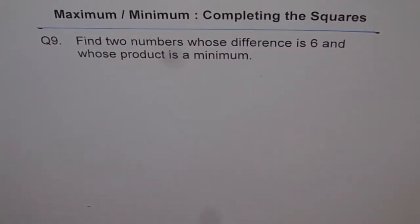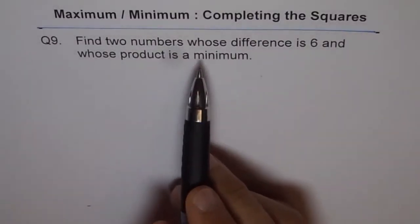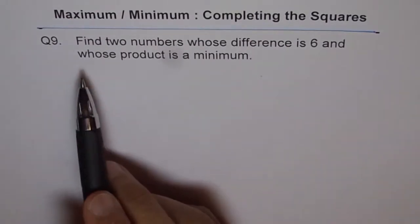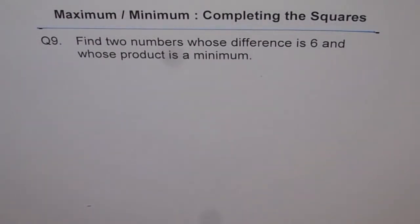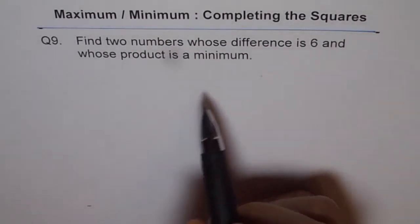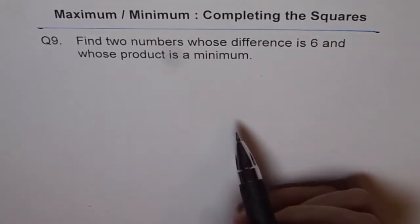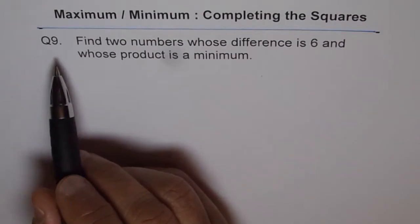Question nine: Find two numbers whose difference is six and whose product is a minimum. We are doing maximum minimum problems using completing the squares method. Remember, maximum minimum problems can be solved by partial factoring and also factoring. You can use any method when specified, you have to use a specified method.